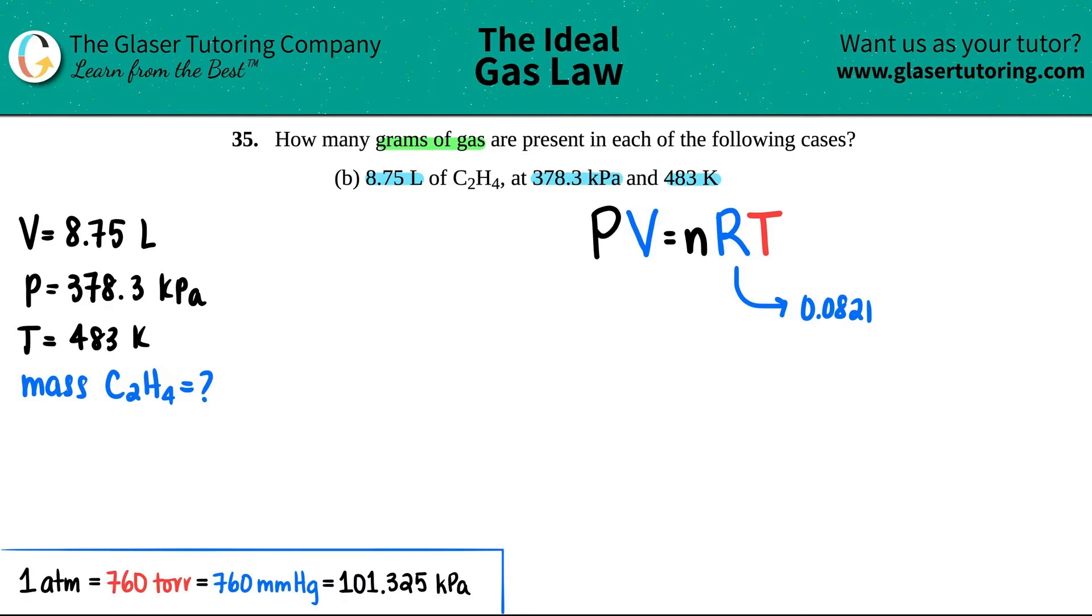This one has all of the units that are in the formula. This is atm times liter divided by mole times kelvin. So the pressure has to be in atm, the volume has to be in liters, the n is the number of moles, and the T value temperature has to be in kelvin.